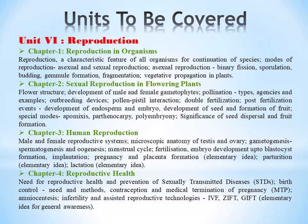Chapter 2, sexual reproduction in flowering plants. Here we'll learn about the flower structure, development of male and female gametophyte, then about pollination types — devices and examples — and outbreeding devices.